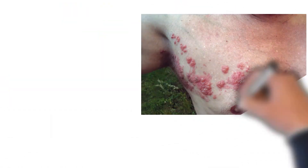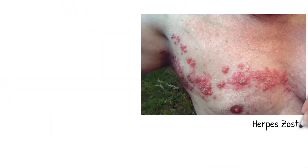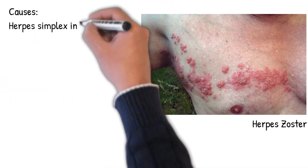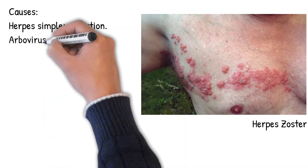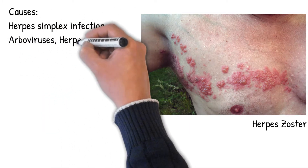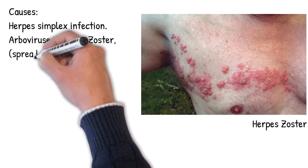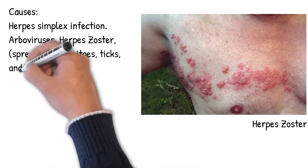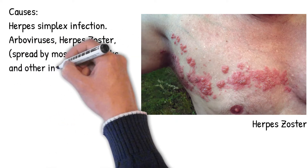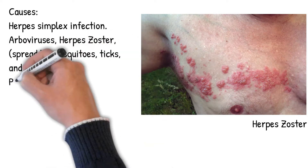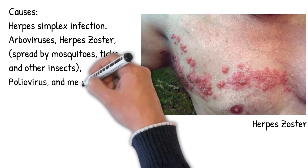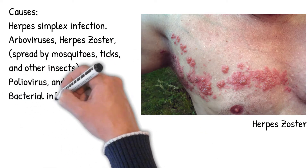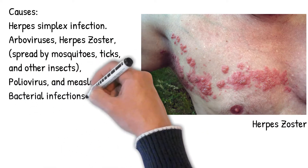Causes: the majority of viral cases of encephalitis have an unknown cause. However, the most common identifiable cause of viral encephalitis is from herpes simplex infection. Arboviruses, spread by mosquitoes, ticks, and other insects, including Japanese encephalitis. Other causes of acute viral encephalitis are rabies virus, poliovirus, and measles virus.